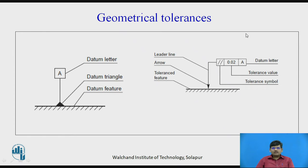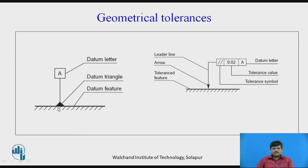This is how geometrical tolerance is represented. The surface on which you want to show the geometrical tolerance is called the datum feature or reference feature. You have a datum triangle which rests on the datum surface, then a straight line with a box, named with a capital letter called the datum letter or reference letter. This is the reference triangle, then a straight line and a reference letter in a square box.